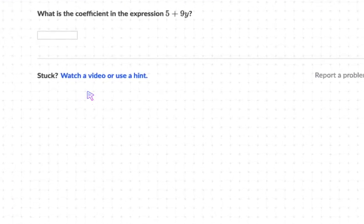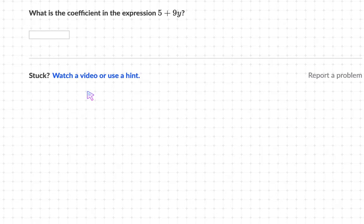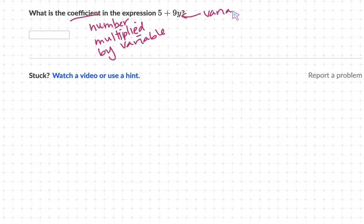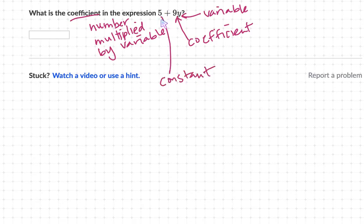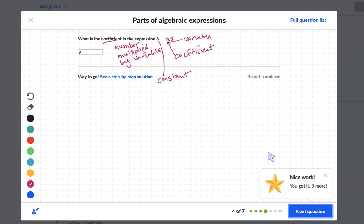Alright. Let's try this one now. What is the coefficient in the expression 5 plus 9y? Go ahead and try this on your own. Alright. So coefficient, if you remember correctly, is the number that's being multiplied by the variable. The variable is the letter. So this one right here is the variable. So that means that 9 has to be the coefficient. The 5 actually is the constant because it's constantly going to stay the same value, 5. It's never going to change. So your answer should be 9. So you really have to remember the names of these parts.